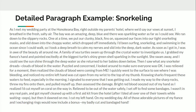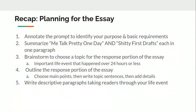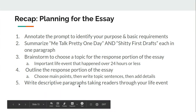So then I would go on to write more paragraphs like this about all of the things in my outline. To recap: annotate the prompt to identify your purpose and basic requirements; summarize Me Talk Pretty One Day and Shitty First Drafts, each in one paragraph; brainstorm to choose a topic for the response portion — this needs to be an important life event that happened over 24 hours or less; create an outline for the response portion, choose your main points, write those topic sentences, then add details; and then start writing those descriptive paragraphs, taking readers through your life event one thing at a time.